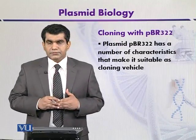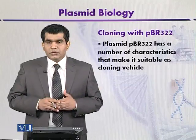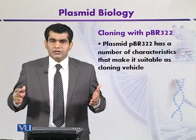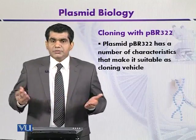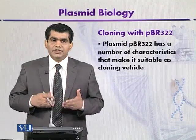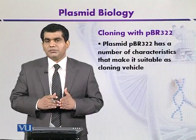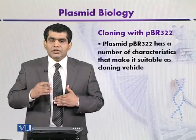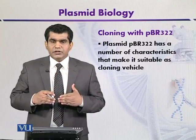Another advantage is that the whole sequence of PBR322 is known, so we have an idea of how many restriction sites are present and what their locations are. Moreover, selectable markers in the form of ampicillin resistance and tetracycline resistance are also available, along with single sites for different types of restriction endonucleases. All these traits are highly desirable and present in PBR322, so it can be used as a cloning vector.